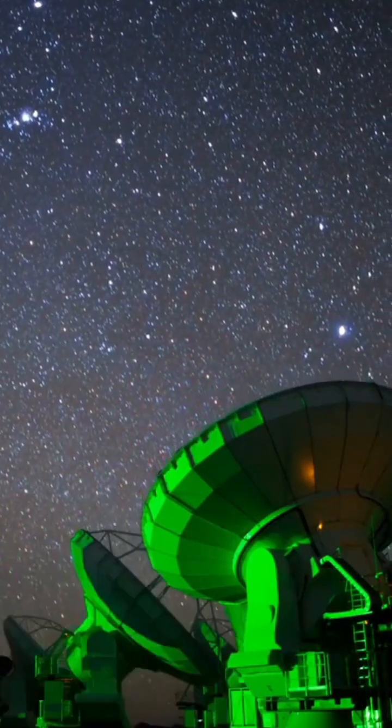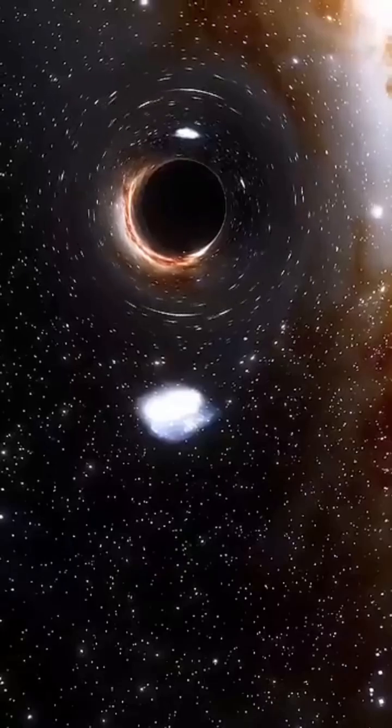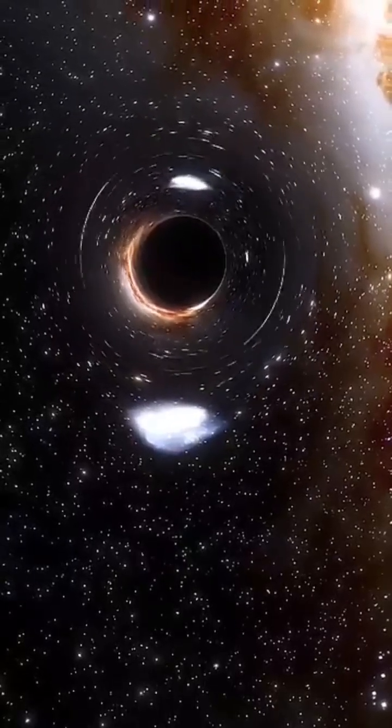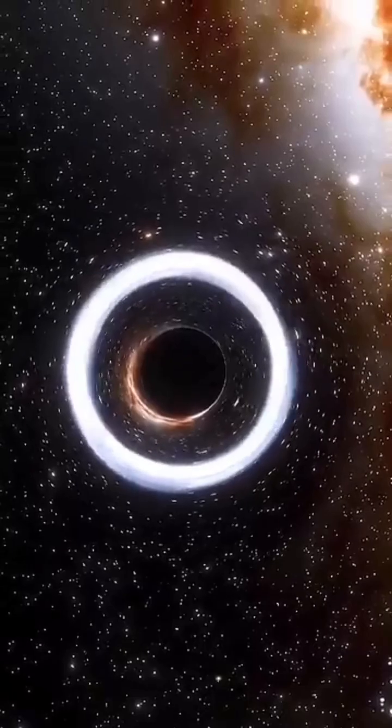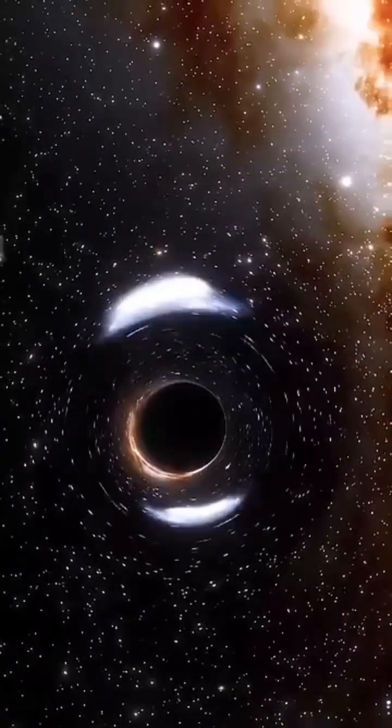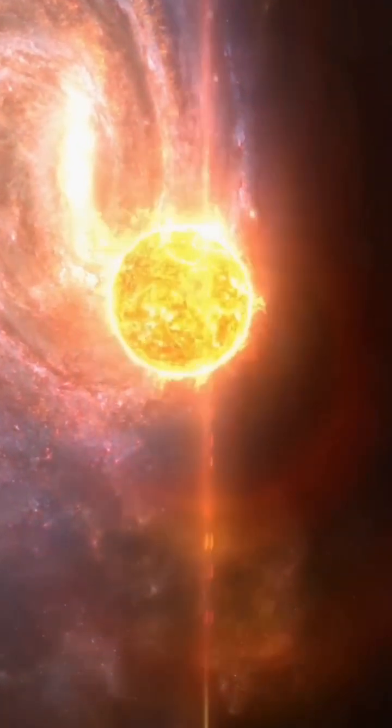Scientists relied on two complementary, high-precision methods. Gravitational lensing, where the black hole's immense gravity warps light into the striking Einstein Horseshoe arc, and stellar kinematics, tracking stars near the galaxy's core racing at nearly 400 kilometers per second.